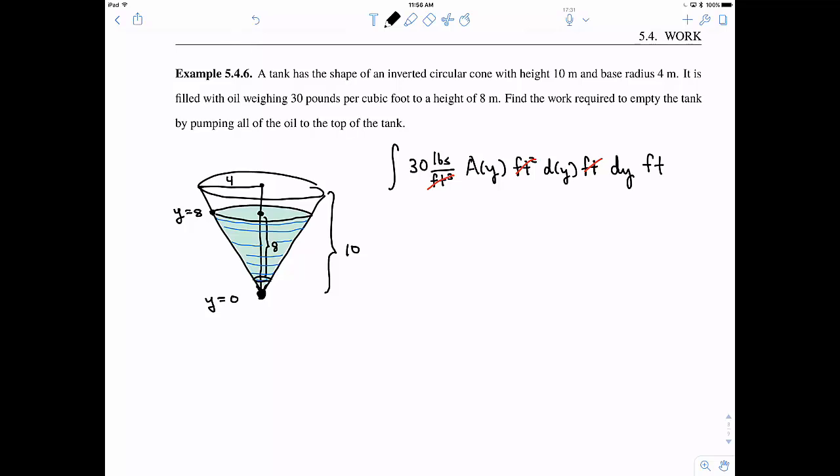Okay, so let me define my axes. I'm going to say y equals 0 is the bottom, y equals 8 is where the liquid stops, and y equals 10 is the top of the tank. Now this will help me determine where do I start and where do I stop pumping oil. So this is going to be from 0 to 8, right? Because that's where all the oil is, between 0 and 8.